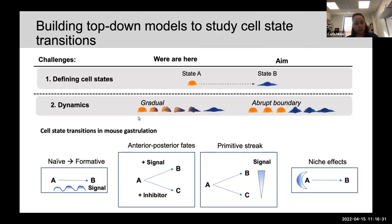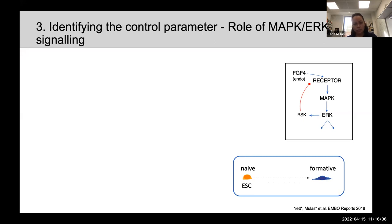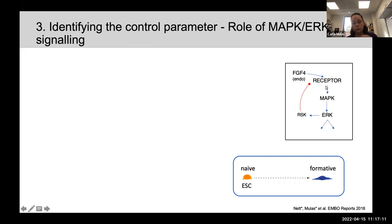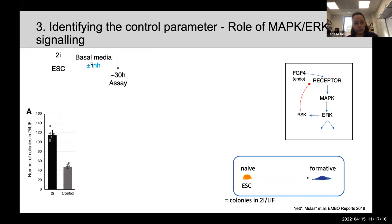This brings us to one of the biggest questions: how do we identify the control parameters? Looking at the same naive-to-formative transition, we know the ERK signaling pathway is really important. FGF4 is a key signaling molecule produced by the embryonic stem cells themselves. It binds a receptor in the plasma membrane, activating a signaling pathway cascade and the ERK pathway, with various negative feedback loops — for example, RSK feeds back at the receptor level to dampen signaling.